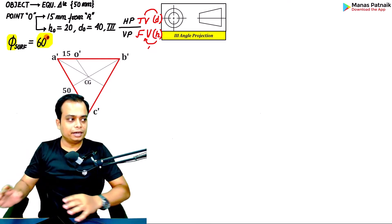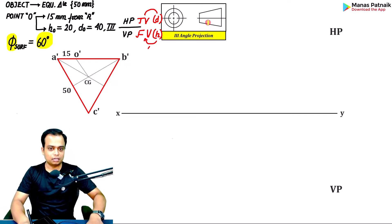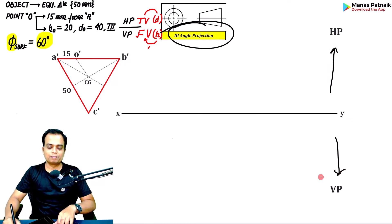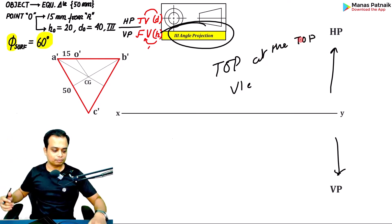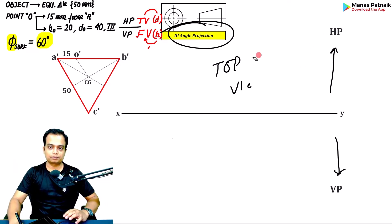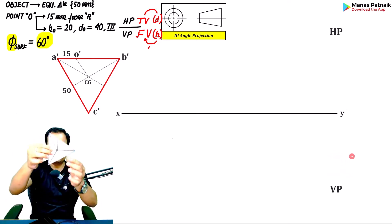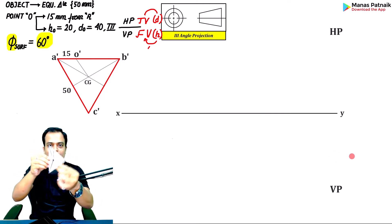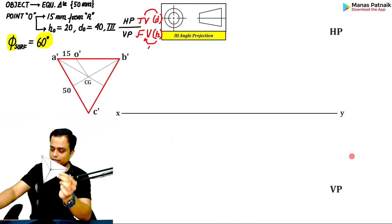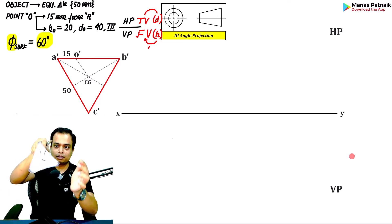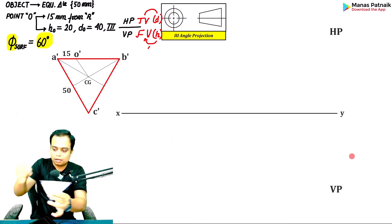In step one, since step two involves inclination with respect to VP, in step one you keep the plane parallel to VP. Begin by creating the front view. Draw an XY line — in third angle projection, HP is above and VP is below, so the top view is at the top. Since the triangle is initially parallel to VP, you will see a full equilateral triangle in the front view in a special suspended position.